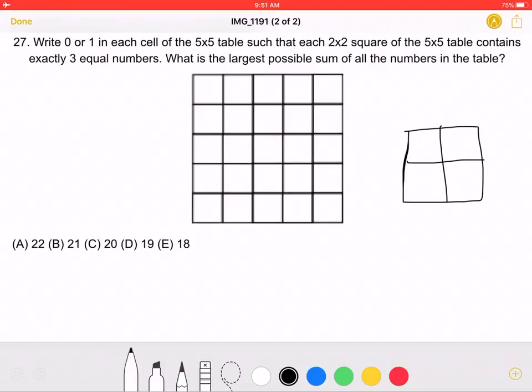To start, the problem states that you must write 0 or 1 in each cell, but it also states that you are looking for the largest possible sum of all the numbers in the table. And that in each 2x2 square, there are 3 equal numbers.